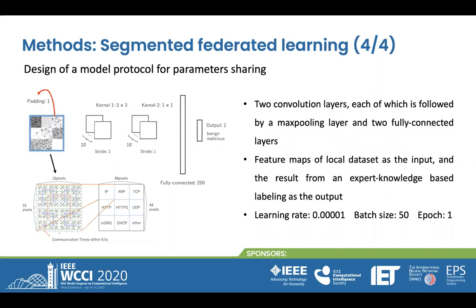Let's move on to the next section. Here is the design of a model protocol for parameter sharing. For the local neural network, we adopted two convolution layers, each of which is followed by a max-pooling layer, and two fully connected layers. The feature maps of the local datasets are used as input, and the results from an expert knowledge-based library are used as output.